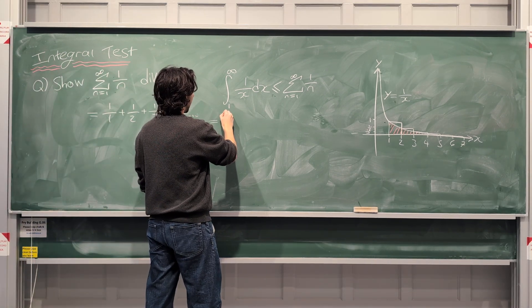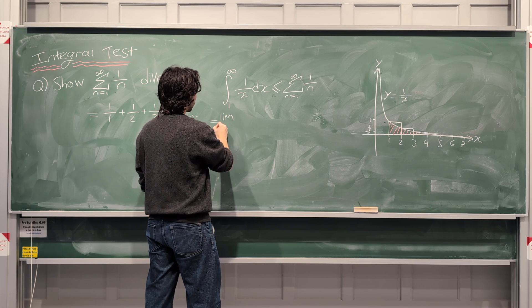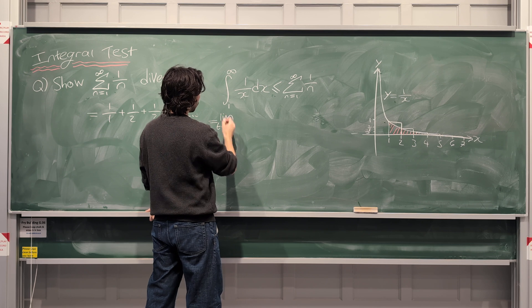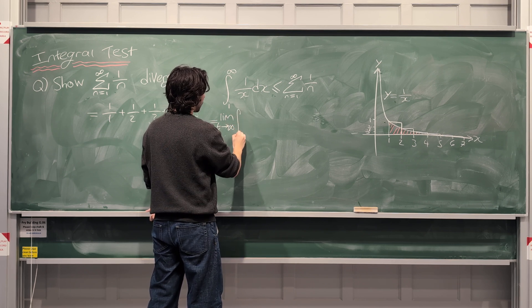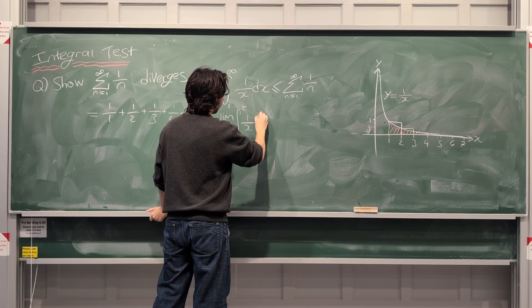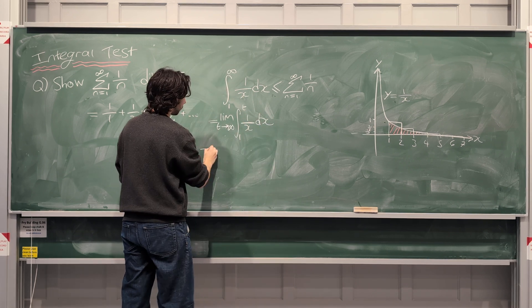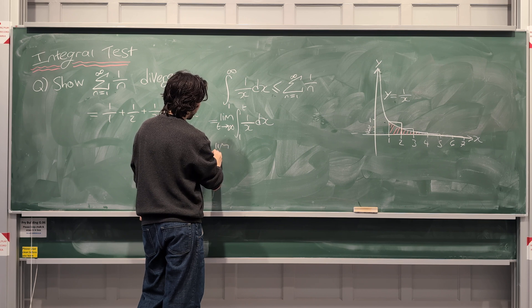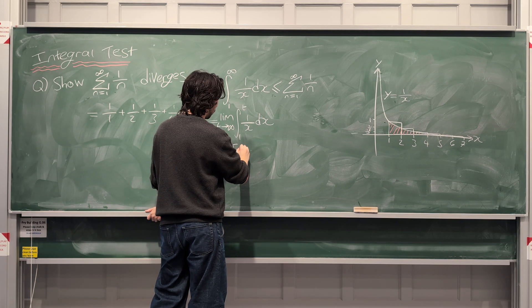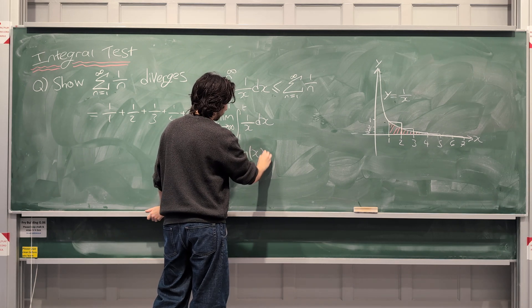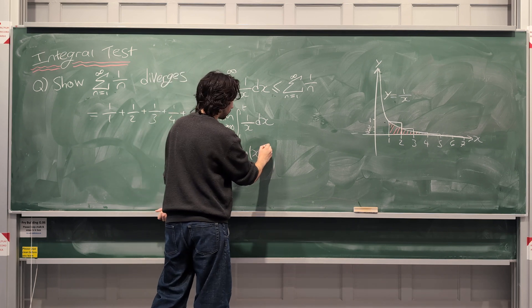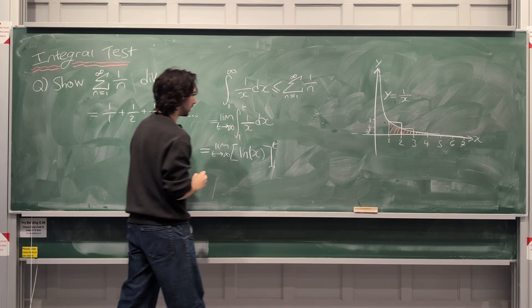And how do we do that? Well, remember, I've got some videos on improper integrals. Wink, wink. But we have to do the limit as t approaches infinity of the integral from 1 to t of 1 over x dx. This is the limit as t approaches infinity of, and what does 1 over x integrate to? The natural log of x. Technically, it's the natural log of the absolute value of x, but we only have positive numbers here, so we don't really care.